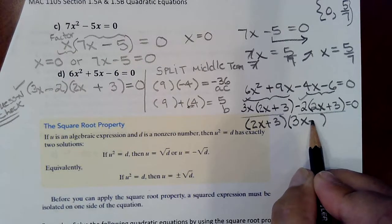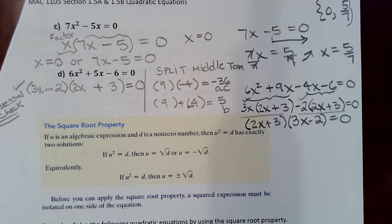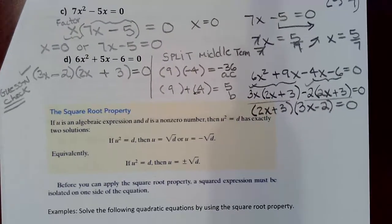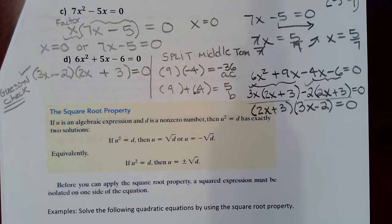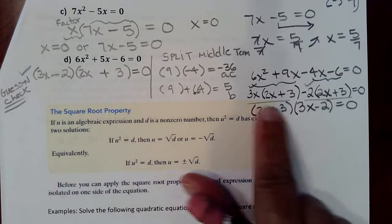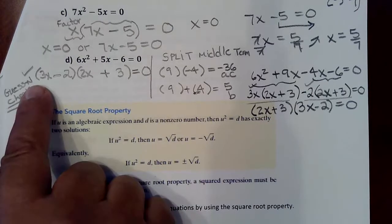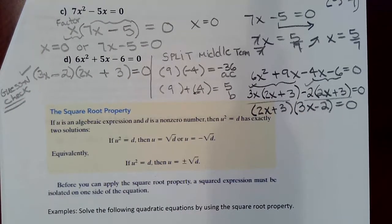In any event, whether you decide to use guess and check or whether you decide to use splitting the middle term, notice that the factors come out the same. This had a 2x plus 3 when we factored it using guess and check. This had a 2x plus 3. This one had 3x minus 2. This one had 3x minus 2.